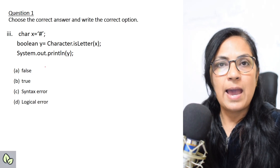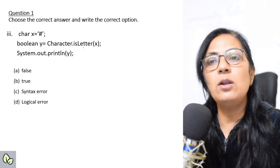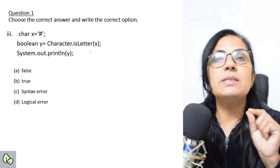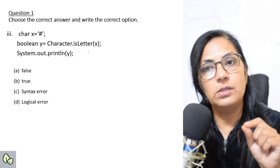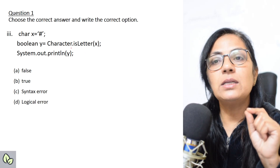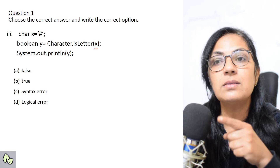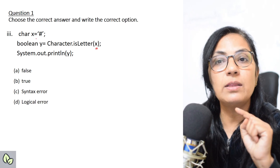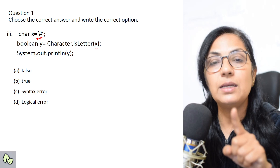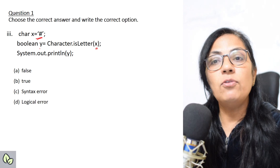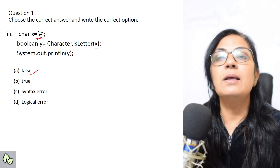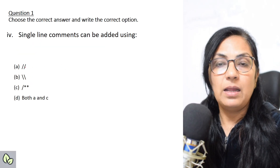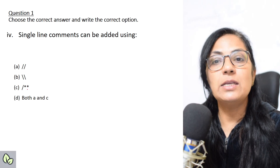Next question: char x = '#', boolean y = Character.isLetter(x). Whenever the function name starts with 'is', the answer will be either true or false. Here x is a variable storing the value '#' (hash). Hash is not a letter or alphabet, so the value of y printed will be false.